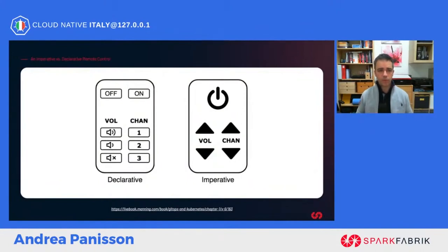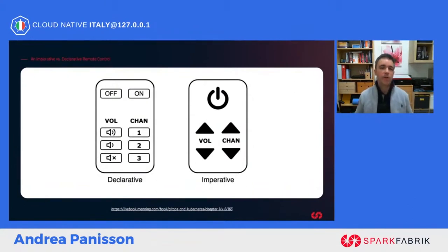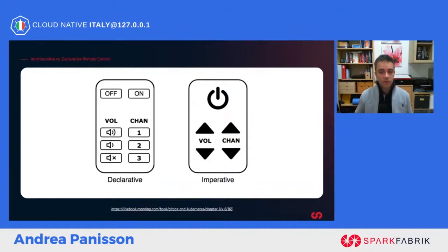Let's make a more practical example using two remote controls — one declarative and one imperative. If I want to set the volume to zero with the declarative remote, I just press the button to set the volume to zero and the TV sets it to zero. I don't care how it did it. With the imperative remote, I have to press the volume-down button one step at a time until the volume reaches zero.